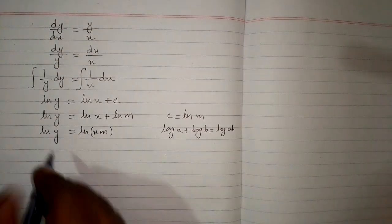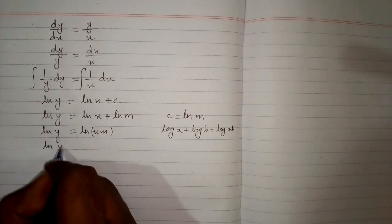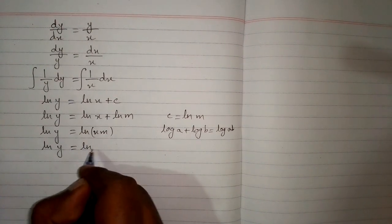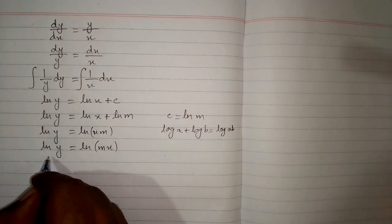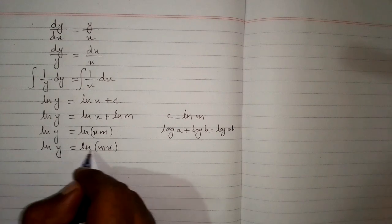So ln of y is equal to ln of x and this can be written as ln of y is equal to ln of mx. Now we have ln on both sides.